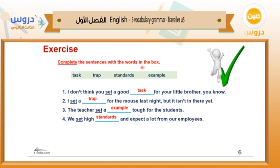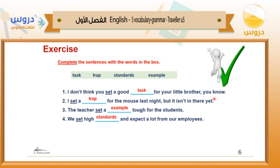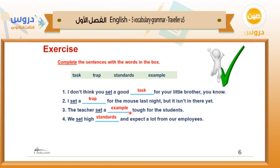The correct answers are: number one, 'I don't think you set a good task for your little brother.' Number two, 'I set a trap for the mouse last night, but it isn't in there yet.' Number three, 'The teachers set an example for the students.' Number four, 'We set high standards and expect a lot from our employees.'